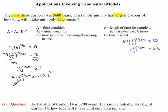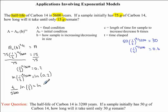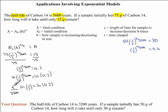So we can rewrite this with T divided by 5,600 out in front of the ln, giving us: T divided by 5,600 times ln of one-half, equals ln of 0.2. Now it's very easy to solve for T since it is no longer an exponent. This is why we took the ln of both sides — to use the properties of the natural logarithmic function and get T into a form that's easy to isolate.